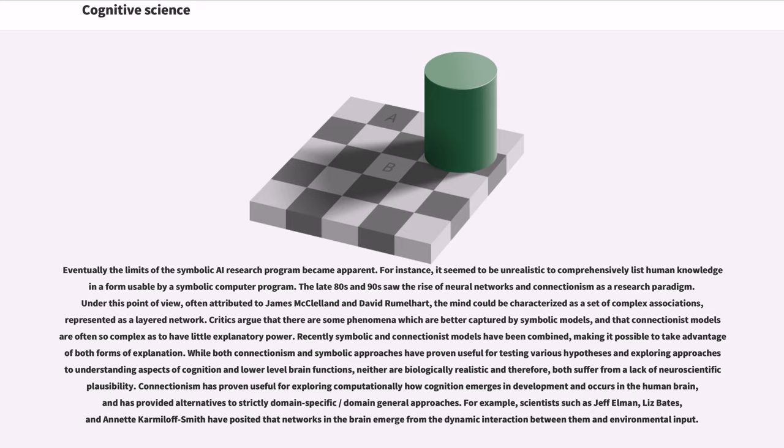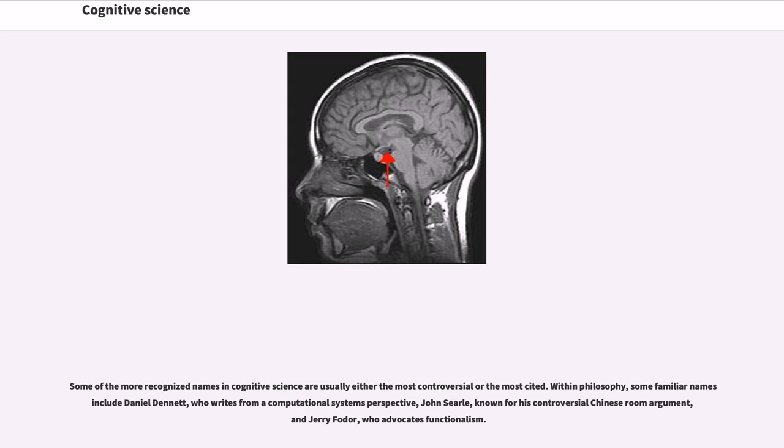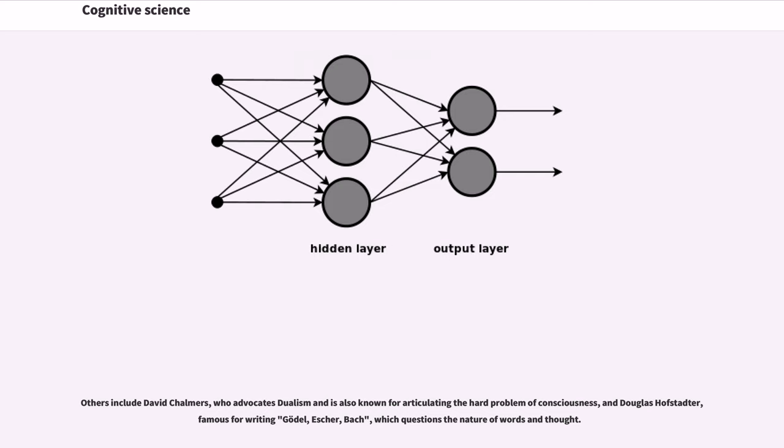Connectionism has proven useful for exploring computationally how cognition emerges in development and occurs in the human brain, and has provided alternatives to strictly domain-specific, domain-general approaches. For example, scientists such as Jeff Elman, Liz Bates, and Annette Karmiloff-Smith have posited that networks in the brain emerge from the dynamic interaction between them and environmental input. Some of the more recognized names in cognitive science are usually either the most controversial or the most cited. Within philosophy, some familiar names include Daniel Dennett, who writes from a computational systems perspective, John Searle, known for his controversial Chinese room argument, and Jerry Fodor, who advocates functionalism. Others include David Chalmers, who advocates dualism and is also known for articulating the hard problem of consciousness, and Douglas Hofstadter, famous for writing Gödel, Escher, Bach, which questions the nature of words and thought.